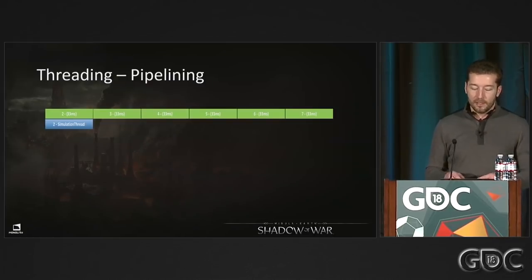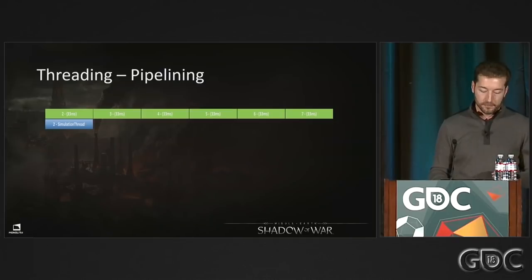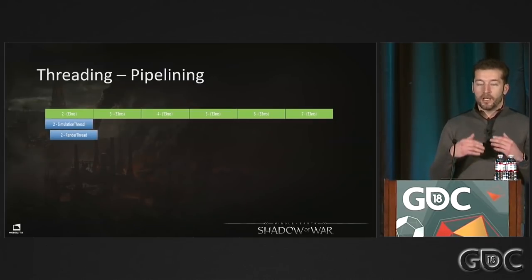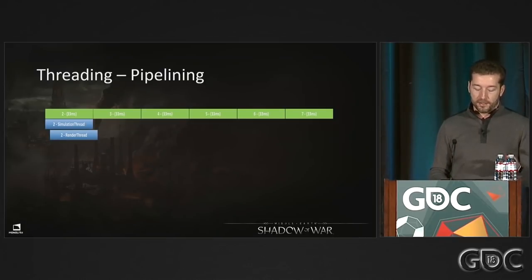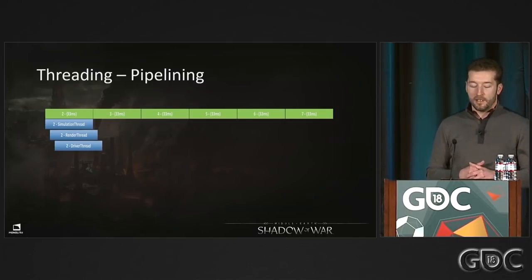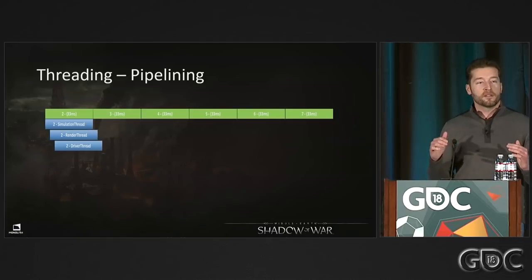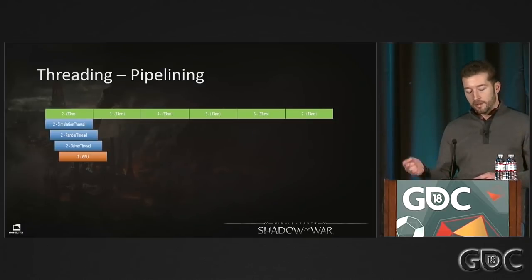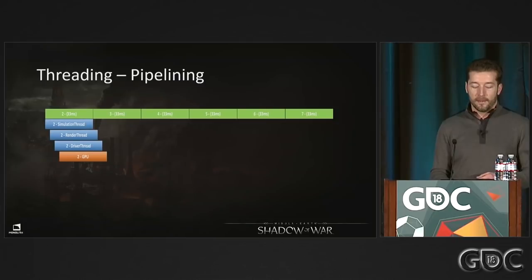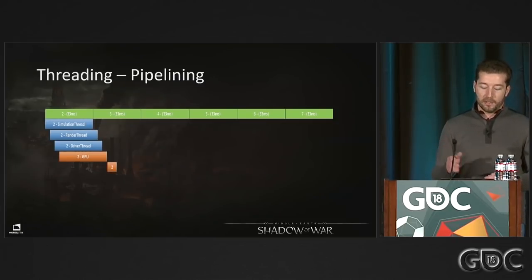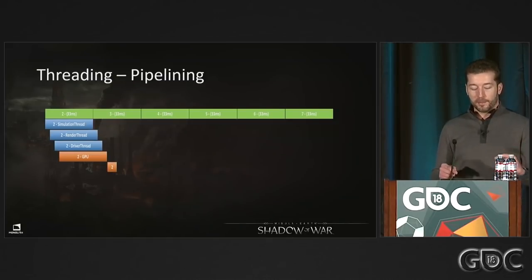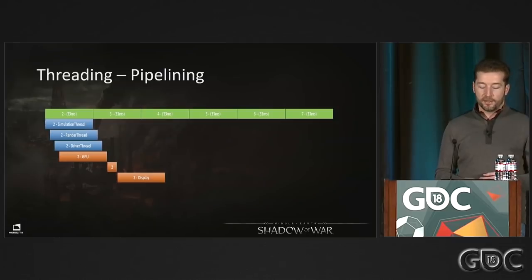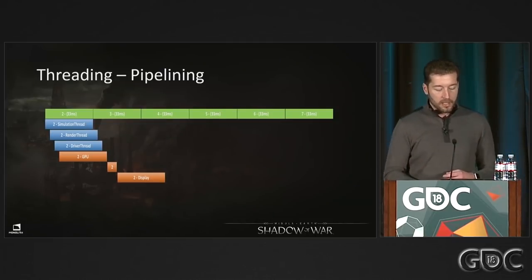Our pipeline stages are: simulation thread (33ms), which pipelines work to the render thread (33ms), which passes to the driver thread (33ms) — think of render as platform-agnostic and driver as platform-specific. The driver writes out the GPU command buffer, which gets its full 33ms on the GPU. When done, it writes the frame buffer to the display queue, and on the next VBlank it flips and displays on screen for 33ms.